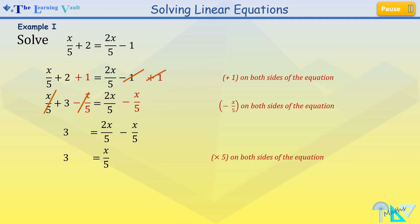Now in order to find x, I'm going to multiply 5 on both sides of the equation. This will give us 15 equals x, which I can just flip around to present it as x equals 15. And that's our answer.